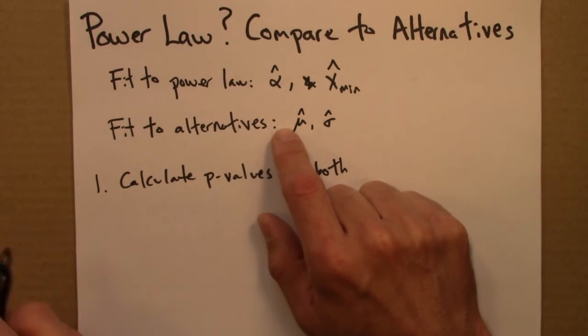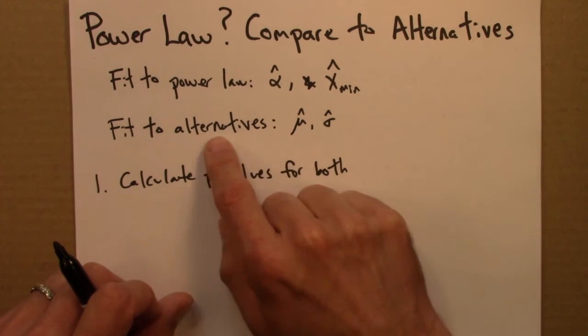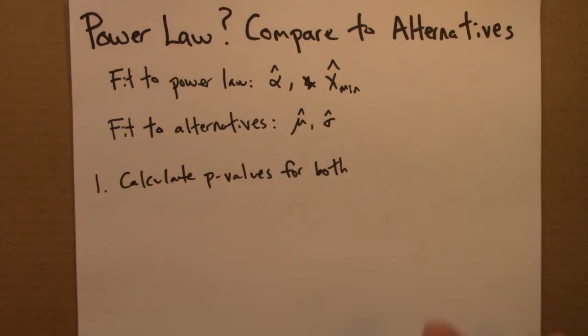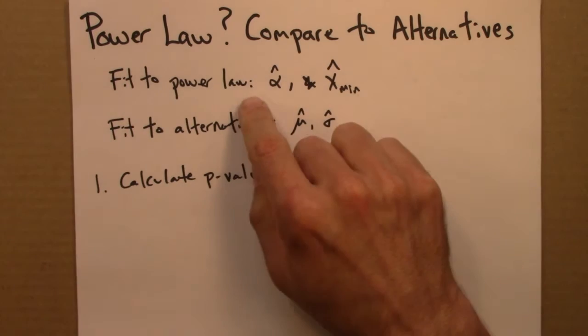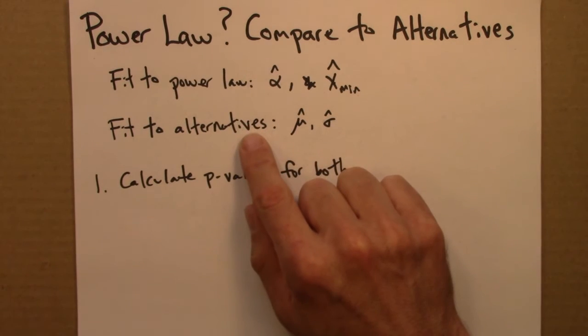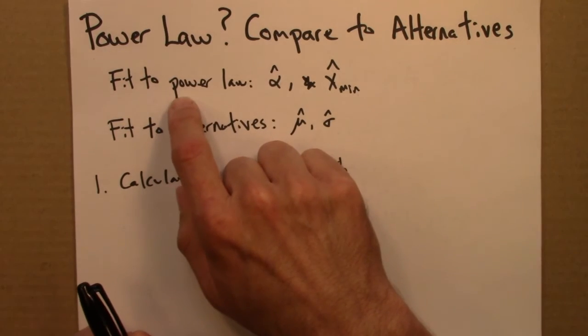Similarly, if we did that for, say, a lognormal, a large p-value would indicate strong evidence for a lognormal. So suppose you fit to a power law and got a high p-value, and said yes, well described by a power law. You try a couple alternatives and get low p-values. Then you can more or less reject those alternatives, and you're set. You can conclude, okay, this really is well described by a power law.